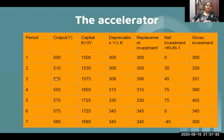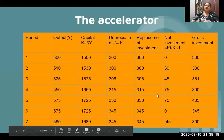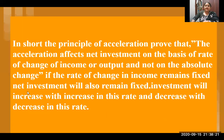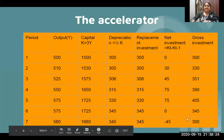In the third time period, output increases to 525. Capital equals 525 into 3, which is 1575. Depreciation equals 1530 divided by 5, which is 306. Replacement investment remains same as depreciation. Net investment is 1575 minus 1530, that is 45. Gross investment is 306 plus 45, which is 351. This process continues for time periods 4, 5, 6, and 7 and so on.